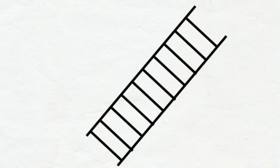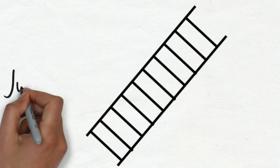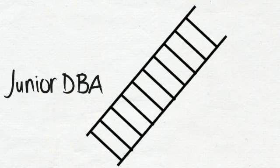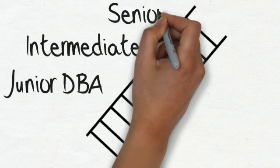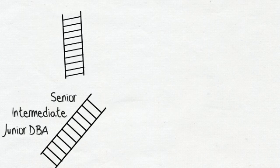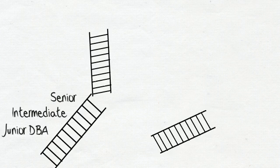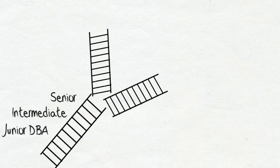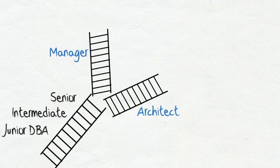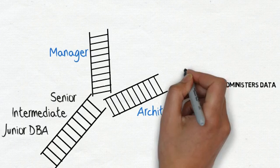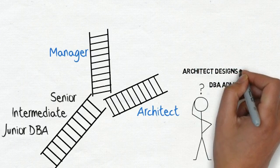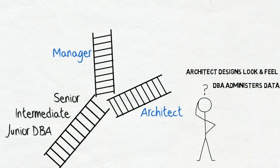So what is a DBA's progression path? Within the organization, you could start as a junior DBA, then work your way to being an intermediate DBA, followed by a senior DBA. At that point you have a choice: you could be a manager or an architect. A DBA manager manages a team of DBAs. The difference between an architect and a DBA is that a DBA focuses on administering data, while the architect focuses on designing the look and feel of this data.